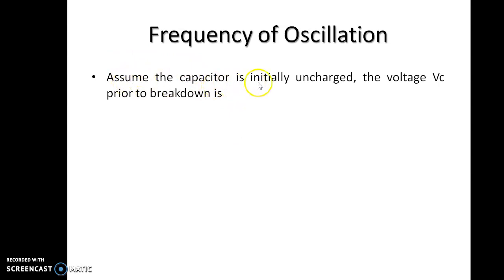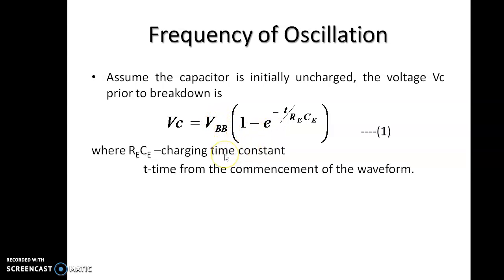Assume the capacitor is initially uncharged, the voltage Vc prior to breakdown is Vc equal to VBB into 1 minus e power minus T by REC, where Vc is the capacitor voltage, VBB is the DC voltage applied, REC is the charging time constant, and T is time from the commencement of the waveform.